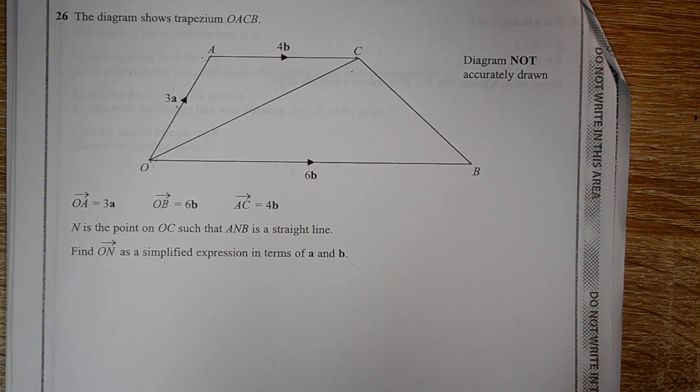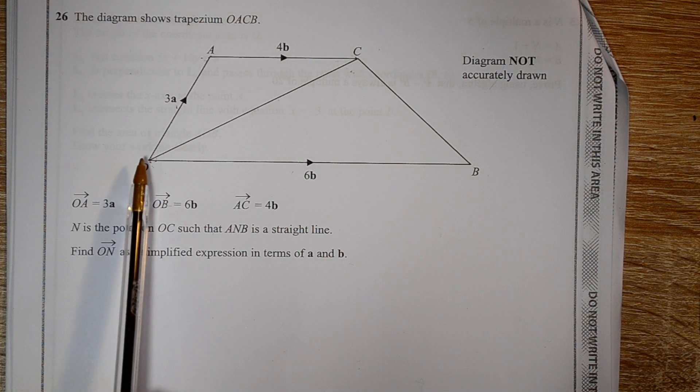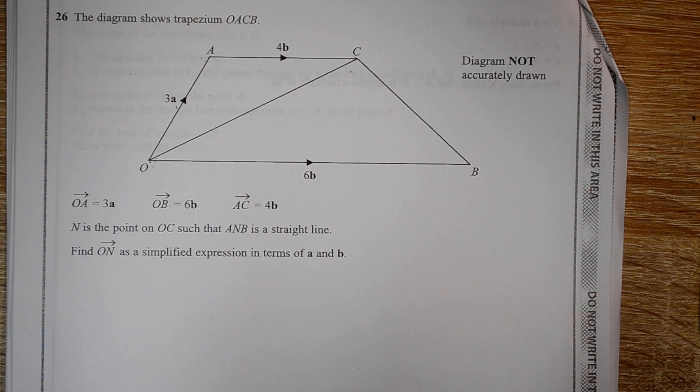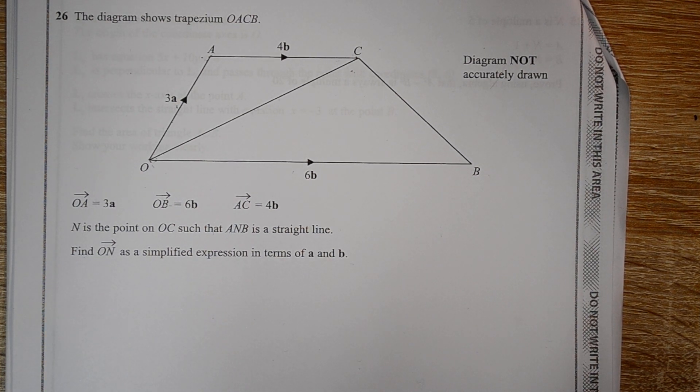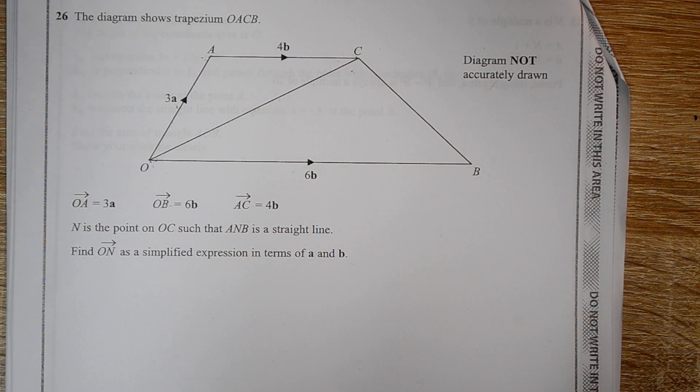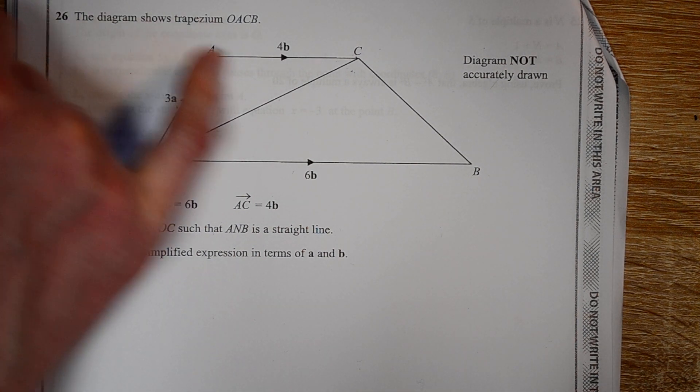You might want to pause the video now so you can familiarize yourself with the question. What we're being asked to find is the vector from O to some point N, which as yet we don't know where it is. We're told where the location of N is in two different ways. First, we're told that it's on the line from O to C, and secondly it's on the line from A to B.